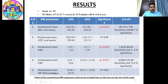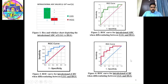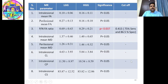The intratumoral mean rCBV and mean rCBF were found to be significantly higher for high-grade gliomas compared to low-grade gliomas, with cutoff values of 1.815 and 8.4045 respectively. A box-and-whisker plot shows the intratumoral mean ADC values, and ROC curves were used for detecting these cutoffs.